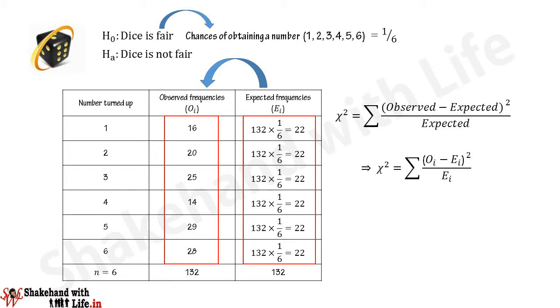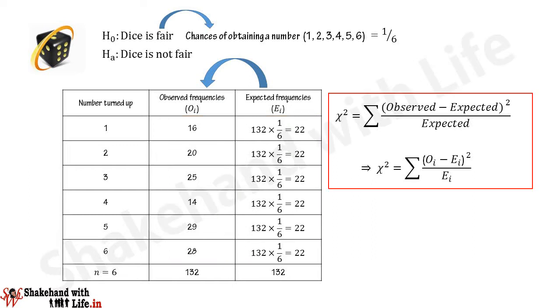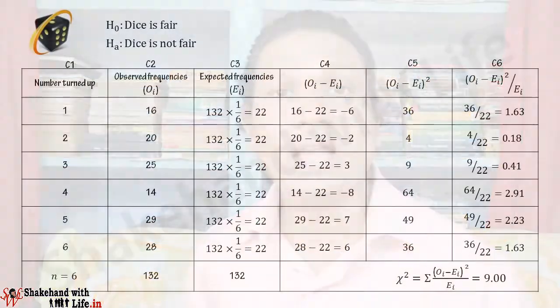To calculate the chi-square value we use the test statistic given by the equation: chi-square equals the sum of (observed frequency minus expected frequency) squared divided by the expected frequency. We have observed frequencies in the 2nd column and expected frequencies in the 3rd column. Now find the differences between observed and expected frequencies in the 4th column by subtracting expected frequencies from the observed frequencies.